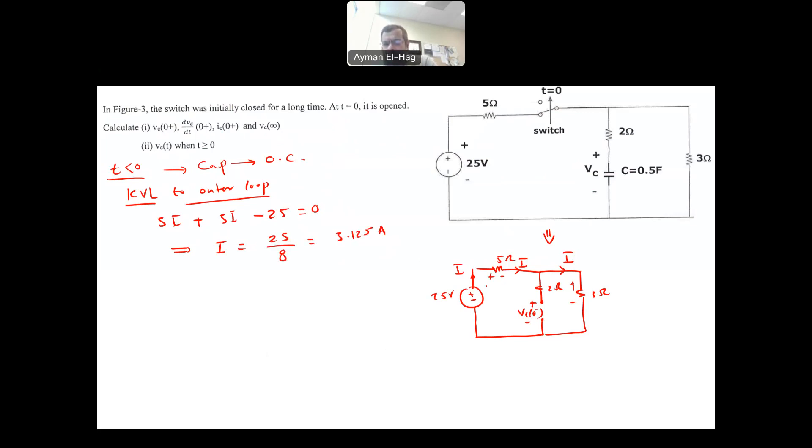Then if you want to find the voltage, you apply KVL in this loop or in that loop. Now the current here is equal to zero. So there is no voltage drop here. So if you take KVL to right loop, and you can do it to the left loop, both will give you exactly the same results. We will have 3I minus VC at zero negative is equal to zero. So your VC at zero negative will basically be equal to 3I, which is equal to 9.375 volt.